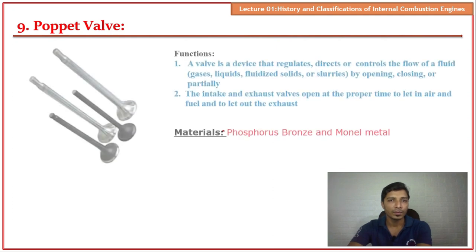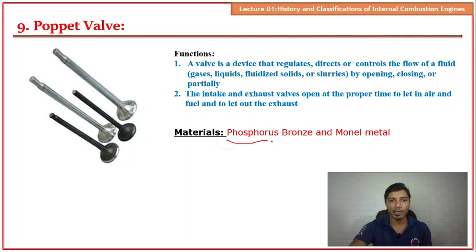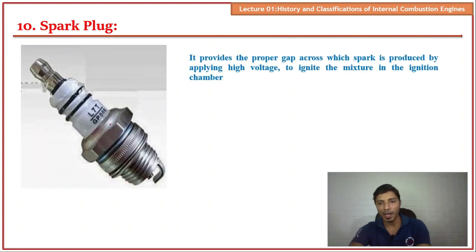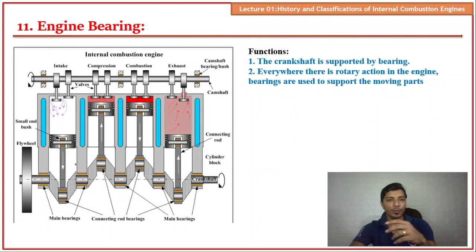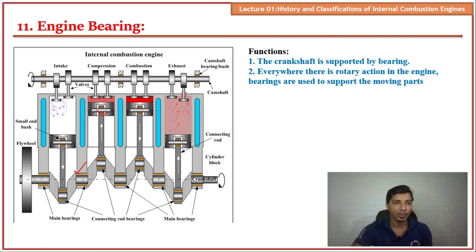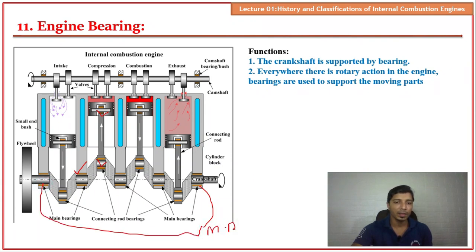Poppet valves are the simple inlet and outlet valves of the engine; the material used is phosphor bronze and monel metal. Spark plugs provide high-intensity sparks in petrol engines to ignite the fuel. Engine bearings are used at various locations — the main bearings support the crankshaft within the stationary casing, allowing the shaft to rotate while the casing remains fixed.